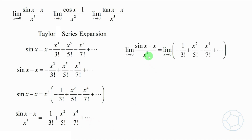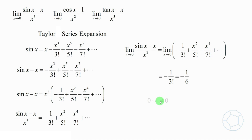If we take the limit as x tends to 0, by putting 0 on the right, we get negative 1 over 3 factorial, which equals negative 1 over 6. So we get the answer, but we're not satisfied with this argument. The reason is that there are infinitely many zeros at the back, and zeros times infinity may not be zero.